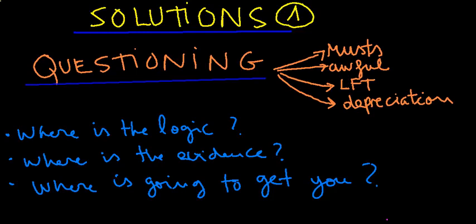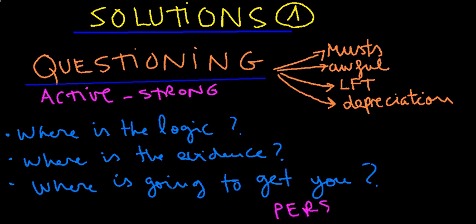But the one I like the most is questioning this thinking: the premises, the must. I think it's the most important thing to question this must and their derivatives: the awful thinking, the low frustration tolerance, and the depreciation labels. This questioning must be active. I mean, you must question, you must argue with yourself, and you must dispute all this irrational thinking in a strong way, active and strong way. You must do it a lot of times, you must do it every day, you must be persistent doing that kind of questioning.